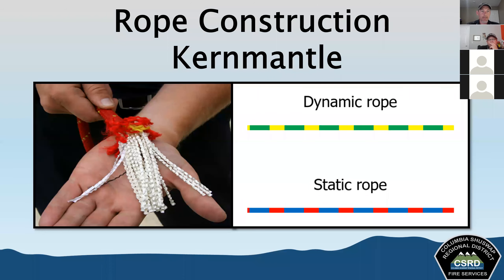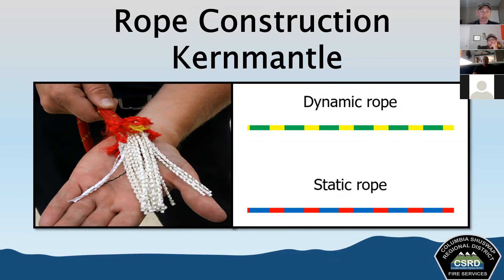Kernmantle is much better for supporting the weight of a body. The sheath provides the remainder of the strength and protects the core from abrasion. There are two different types of kernmantle: dynamic and static. Dynamic rope is a high-stretch type used in situations where somebody might be subjected to a long fall — it stretches to take energy out of the fall rather than causing an abrupt stop. It's designed to be elastic and stretch when loaded without breaking, and is not typically used for rescue or hoisting — it's more of a climbing rope.